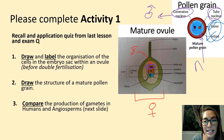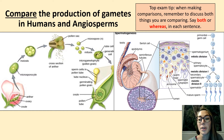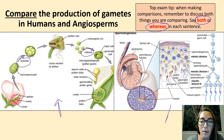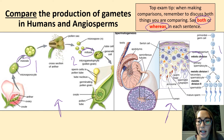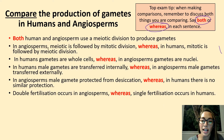Compare the production of gametes in humans and angiosperms — angiosperms being the term for flowering plants. A top exam tip: remember to say 'both' or 'whereas' when making comparisons. For example, both angiosperms and humans carry out meiosis and mitosis during reproduction. One key difference is that in angiosperms meiosis comes first and mitosis second, whereas in human sperm production mitosis comes first and meiosis after. Pause the video to check if you can add further differences to your notes.